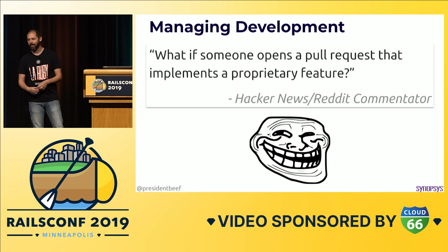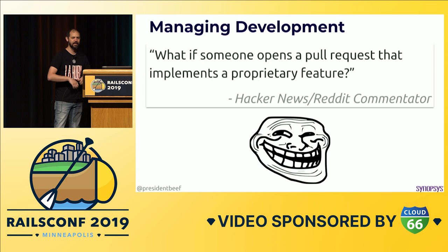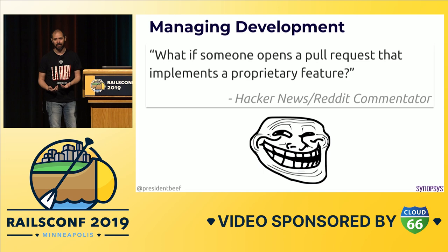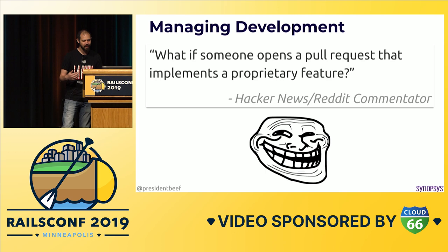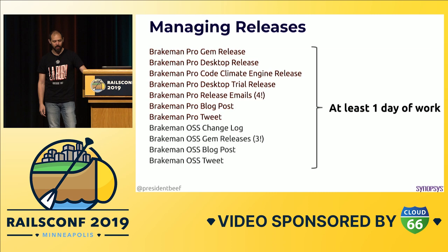A quick comment: every time someone does a commercial fork, someone has to come along and say, 'Oh, but what if someone opens a pull request that implements your proprietary features?' — as if this is some gotcha that no one's ever thought of before. In my experience, I've never seen this happen — where someone spends the time to implement a proprietary feature and then tries to submit it back as open source. It doesn't seem like something that happens, and it's definitely not something you have to plan for up front. You can deal with it on a one-off basis.